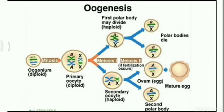In oogenesis, the germinal epithelium contains oogonia — egg mother cells — which are diploid. These undergo repeated mitosis to form the primary oocyte, which is also diploid. Then in meiosis I, a secondary oocyte is produced that is haploid, and the first polar body is also produced.